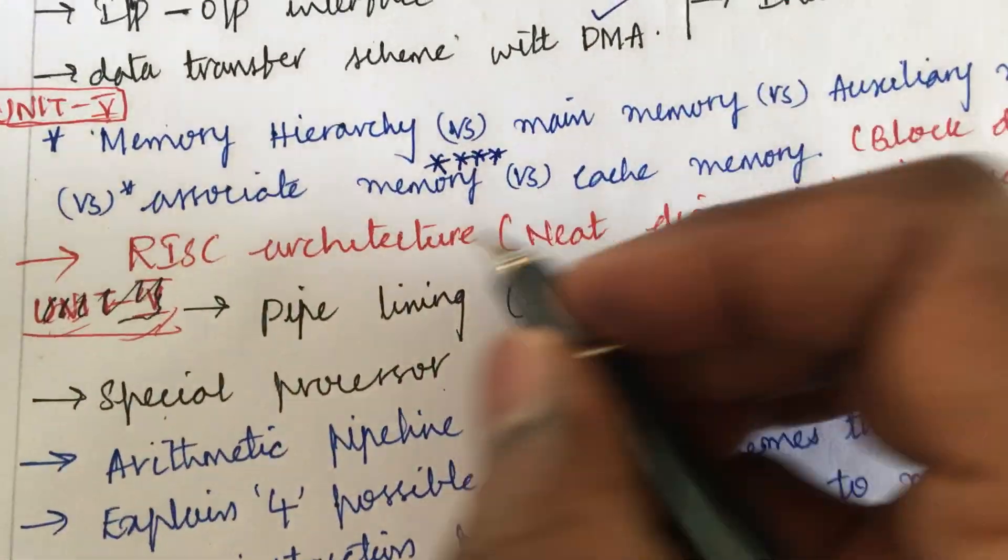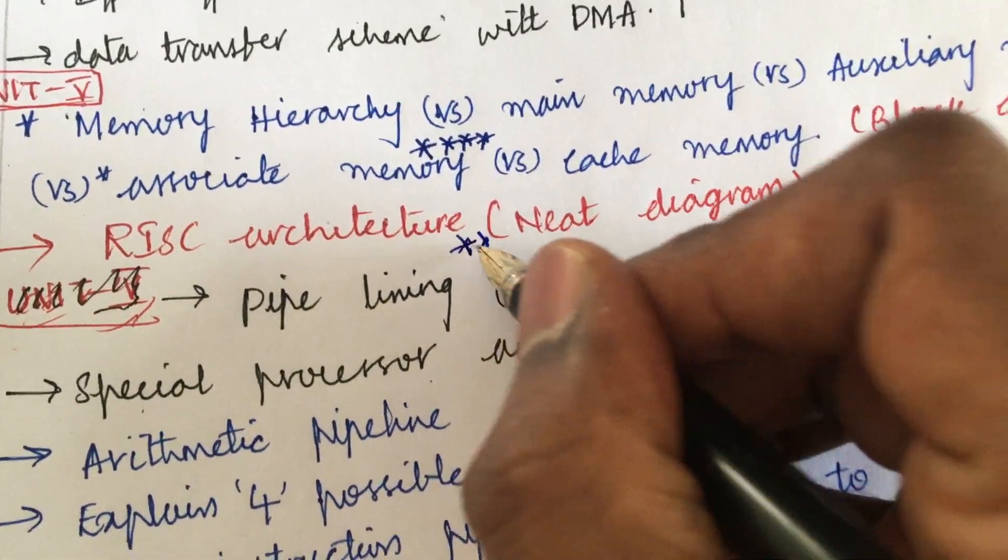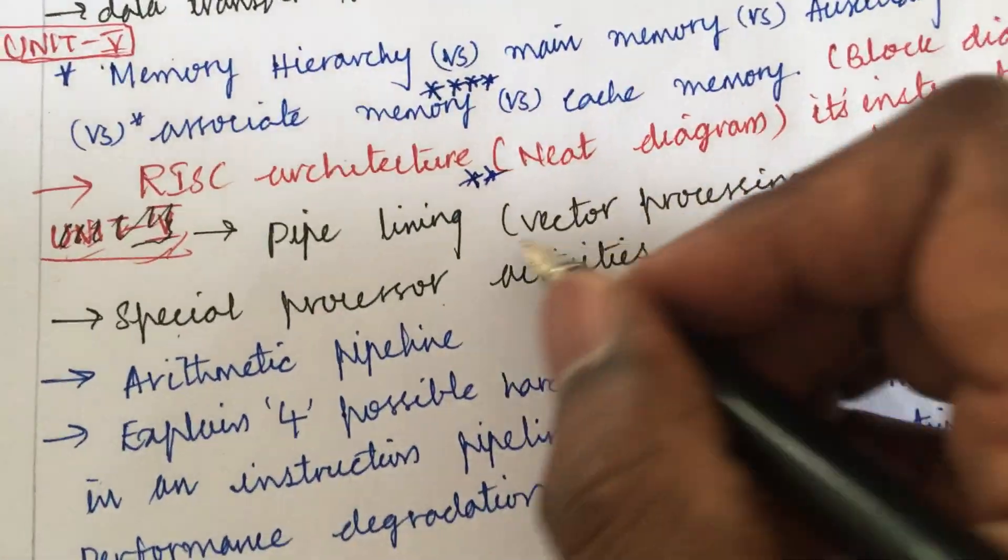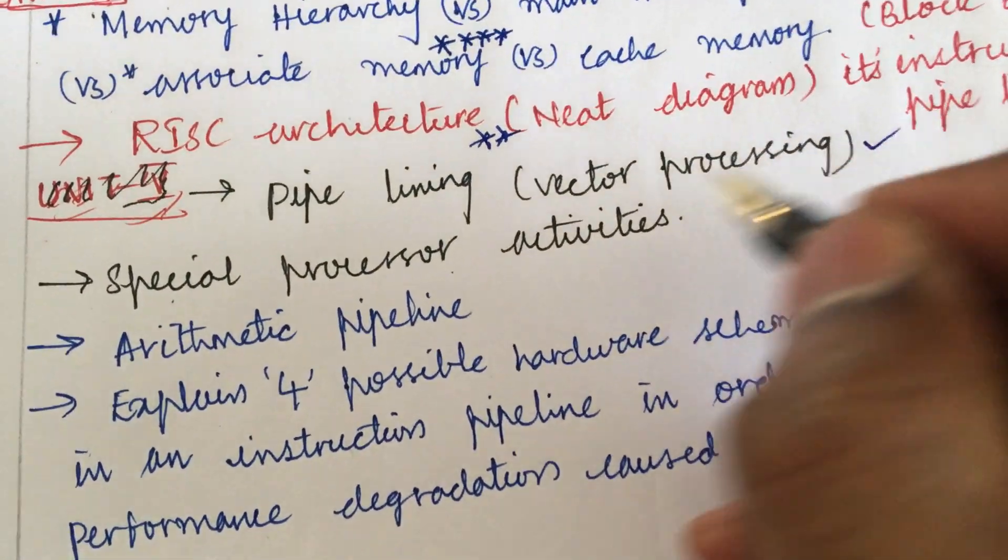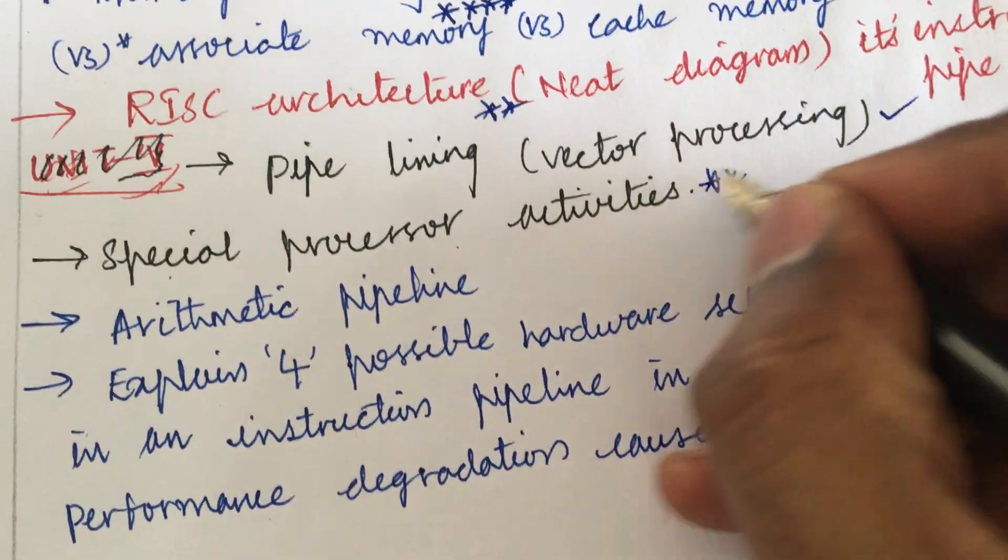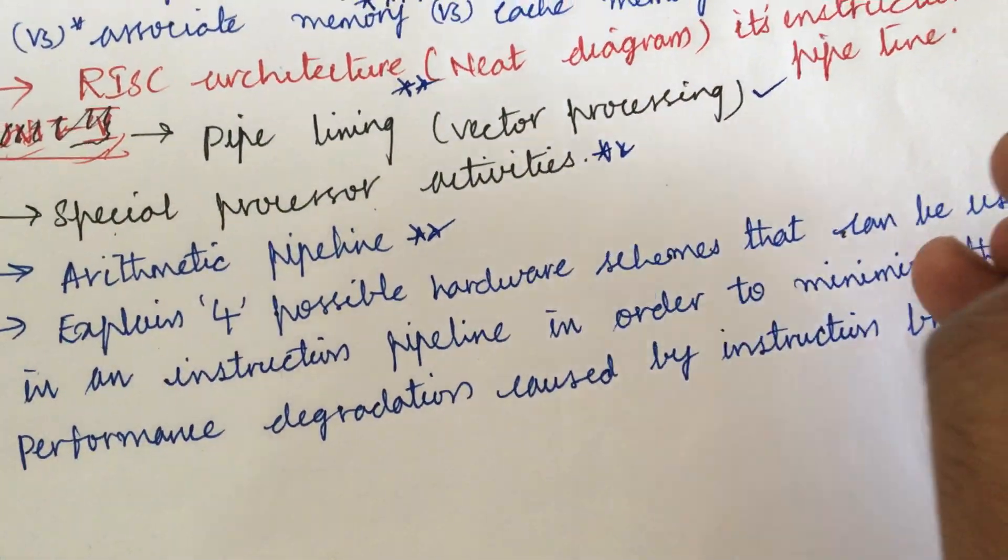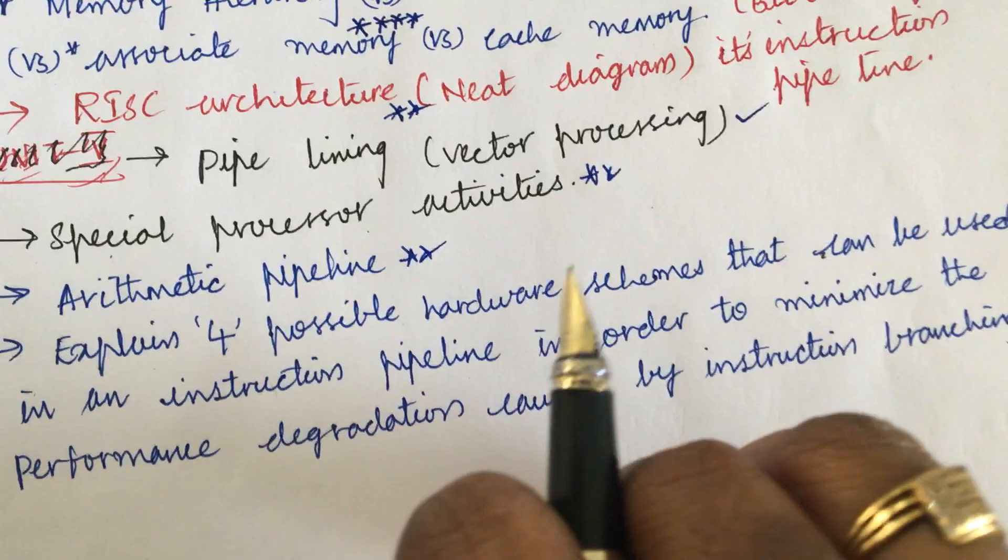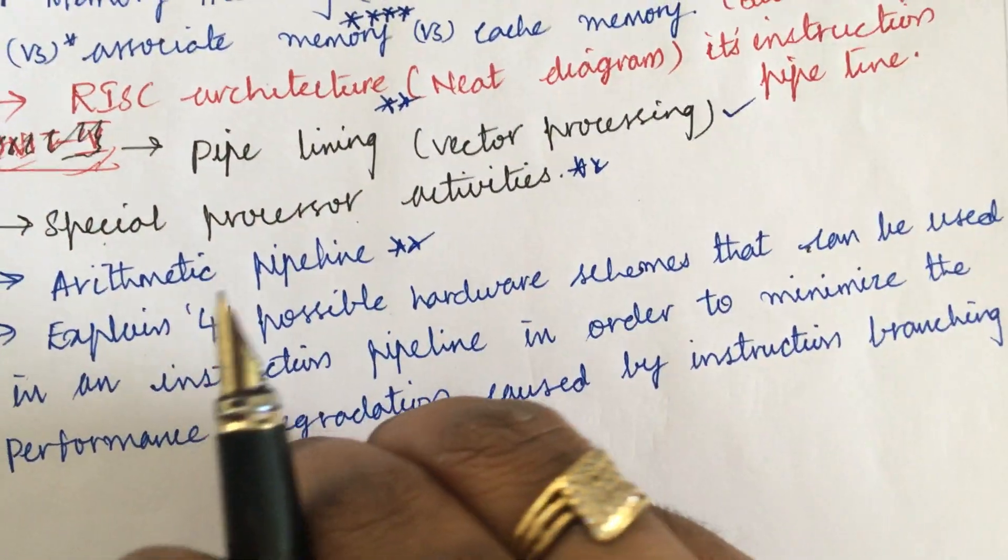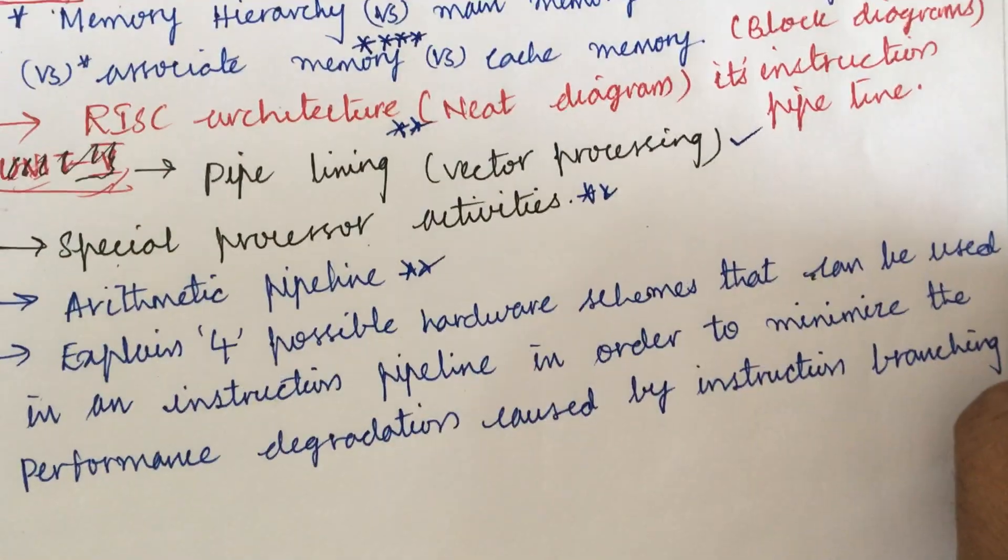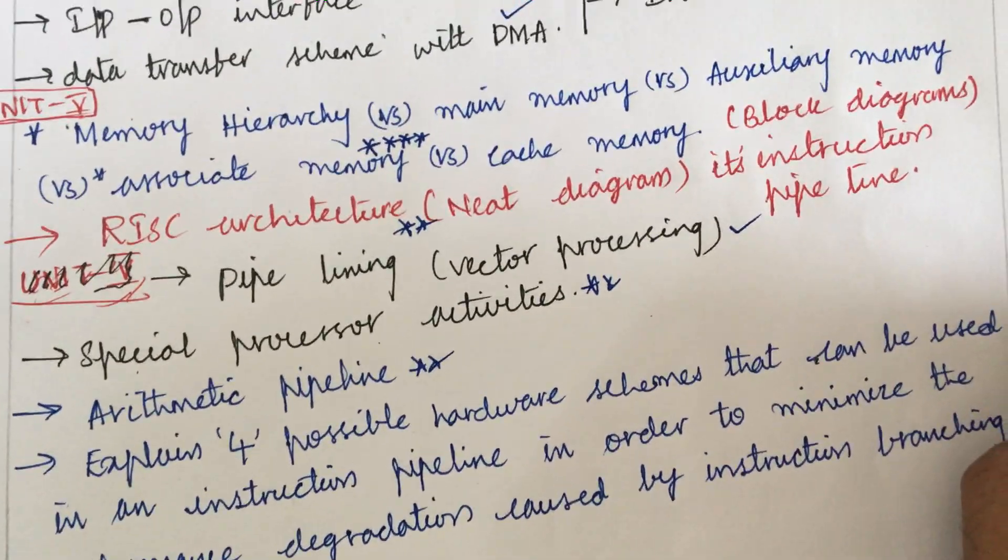RISC architecture is set to the short very important long question along with the need. Diagram, explain the instructions of the pipeline, pipeline, explain the vector processing the special, processor architecture the short question, arithmetic pipeline the short question. Explain four possible hardware schemes that can be used in an instruction pipeline in order to minimize the performance degradation caused by the instruction branching. Such type of question is asked several times in the previous year question paper.